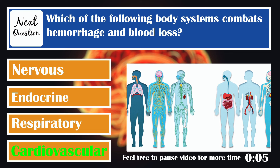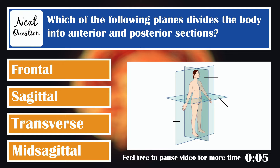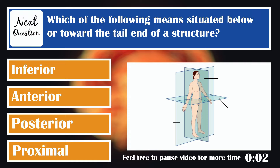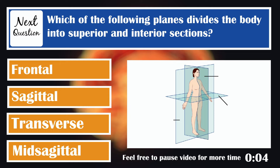Which of the following planes divides the body into anterior and posterior sections? The frontal plane, also known as the coronal plane. Which of the following means situated below or towards the tail end of a structure? Inferior. Which of the following planes divides the body into superior and inferior sections? The transverse plane, or horizontal plane.